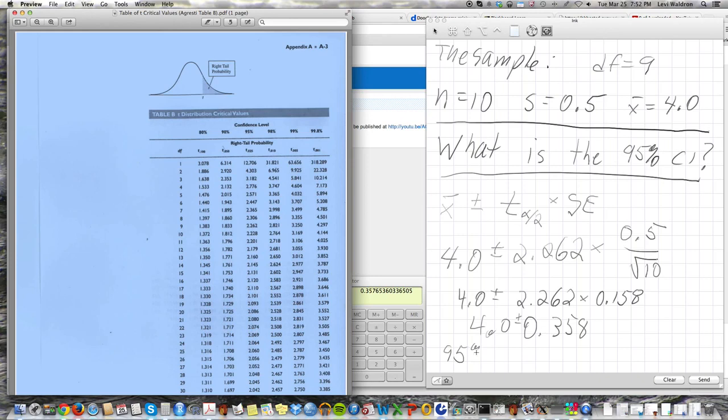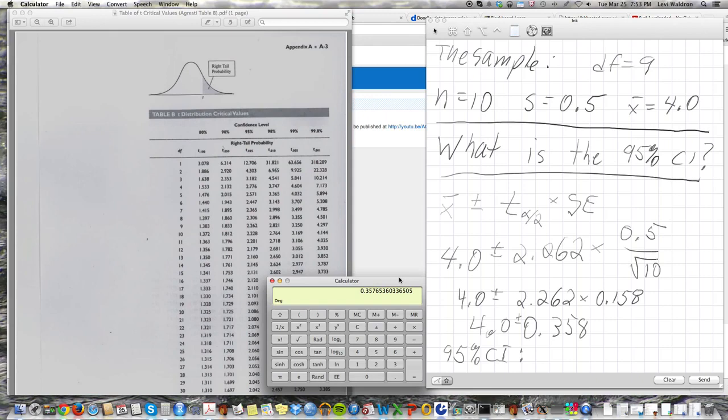So the 95% confidence interval, I'll just put this in memory. Go 4 minus that, so the lower bound is 3.64, and I'll start rounding off here, 3.64 to, and the upper bound is 4 plus the 0.358, and that's 4.36.